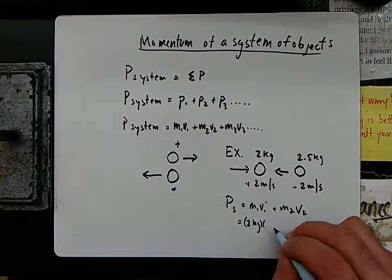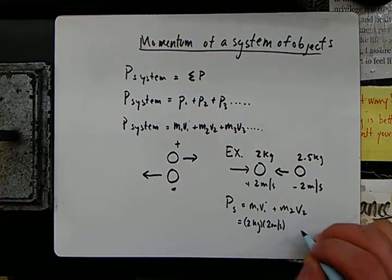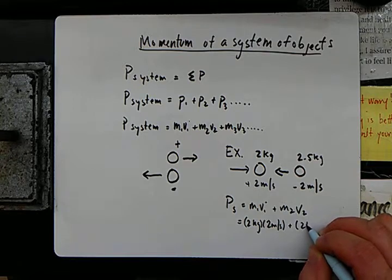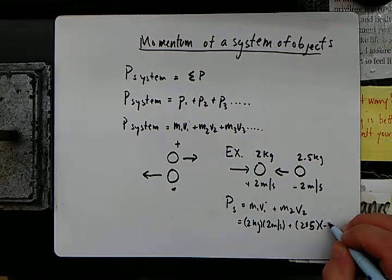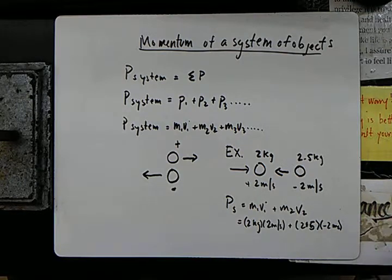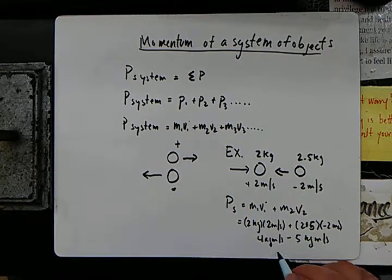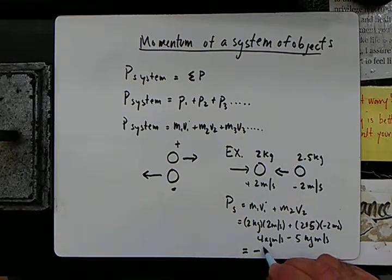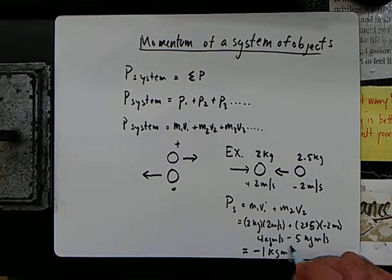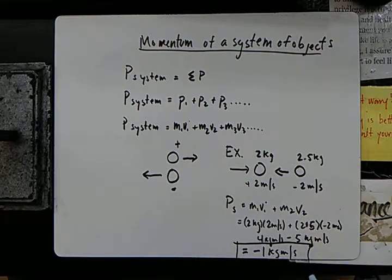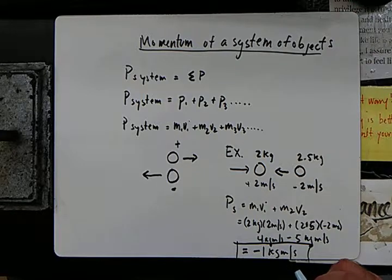times two meters a second plus two point five kilograms times negative two meters a second. So if we have four here minus five here, the total momentum of the system is negative one kilogram meters per second.